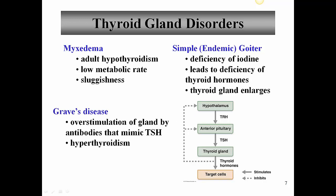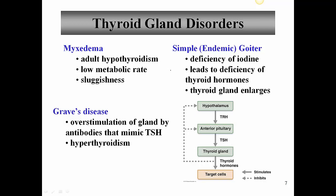Another condition we can relate to the hypothalamic-pituitary thyroid axis is Graves' disease. Graves' disease is not actually a disease of the thyroid itself, but an autoimmune disorder where the immune system makes antibodies that mimic the action of TSH. These antibody molecules bind to the thyroid gland, mimicking TSH, and cause production and secretion of thyroid hormones. As thyroid hormone levels go up, TRH and TSH go down due to the usual negative feedback. But in this case it's not TSH stimulating the thyroid - it's the autoantibodies - and these continue to stimulate thyroid hormone production even in the absence of TRH and TSH.